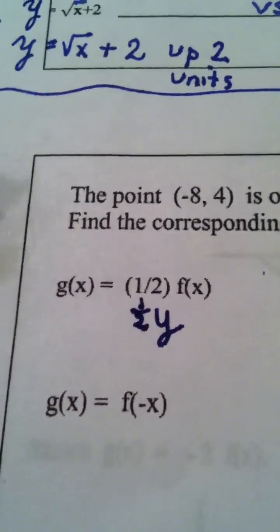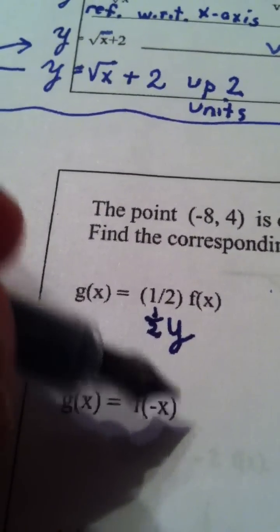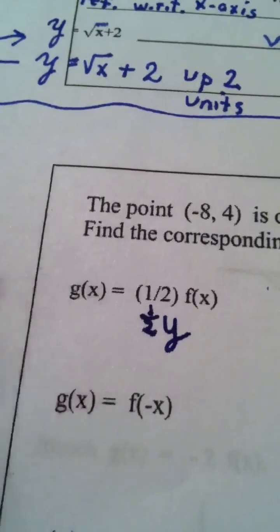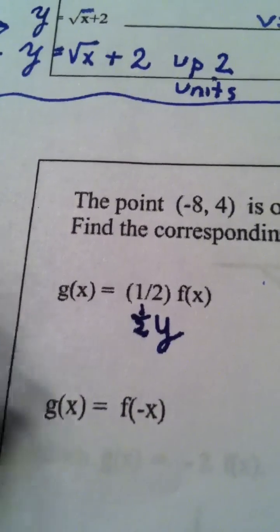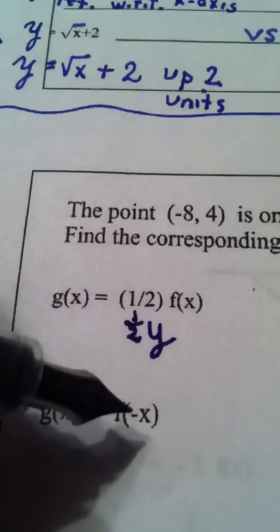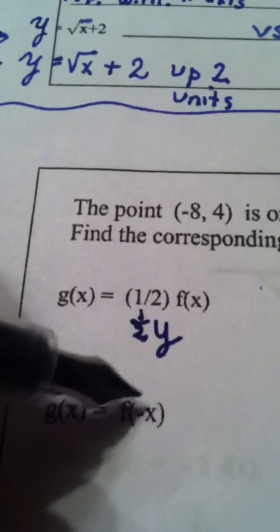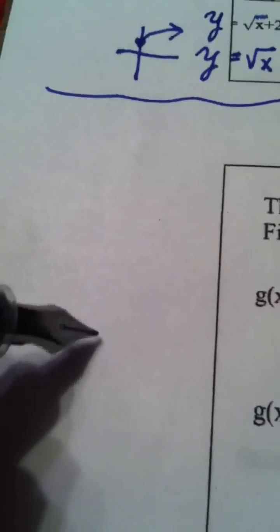Now, there's another way to think about this. f of the opposite of x is a reflection of the graph of f around the y-axis. Because remember, whenever you multiplied the x value by -1, think about this.